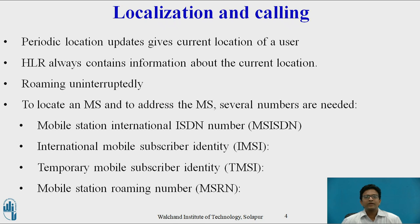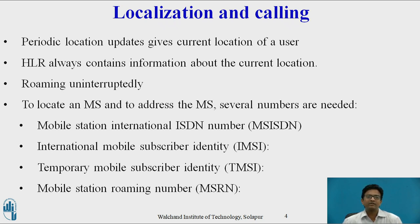In order to locate and address a mobile station, several numbers are needed: Mobile Station ISDN Number (MSISDN), International Mobile Subscriber Identity (IMSI), Temporary Mobile Subscriber Identity (TMSI), and Mobile Station Roaming Number (MSRN). Let us see each one by one.